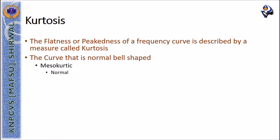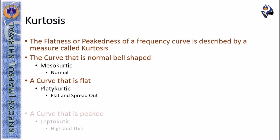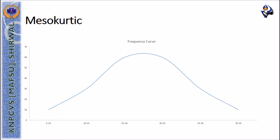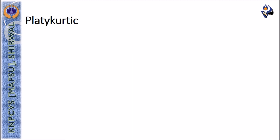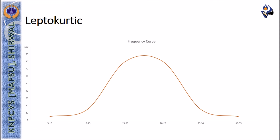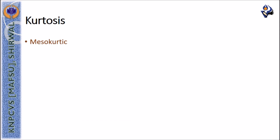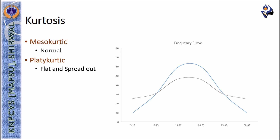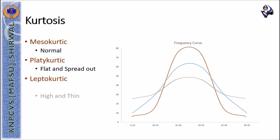A curve that is normal bell-shaped is known as mesocurtic. A curve that is flat is known as platycurtic. A curve that is peaked is known as leptocurtic. In the case of a mesocurtic curve, we observe a normal curve. A platycurtic curve has a flat and spread-out structure, while a leptocurtic curve appears high and thin.